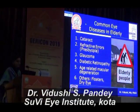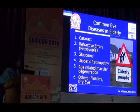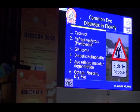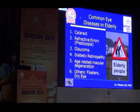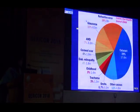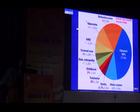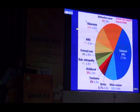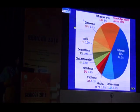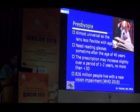So what are the common eye diseases seen in the elderly? Cataract, refractive errors, glaucoma, diabetic retinopathy, age-related macular degeneration, and these problems which are not blinding but are problems nonetheless for the elderly. This is why blindness is a bigger problem in the geriatric age group — because most of these causes like cataract, glaucoma, and AMD occur in the age group above 40 or 45 years.